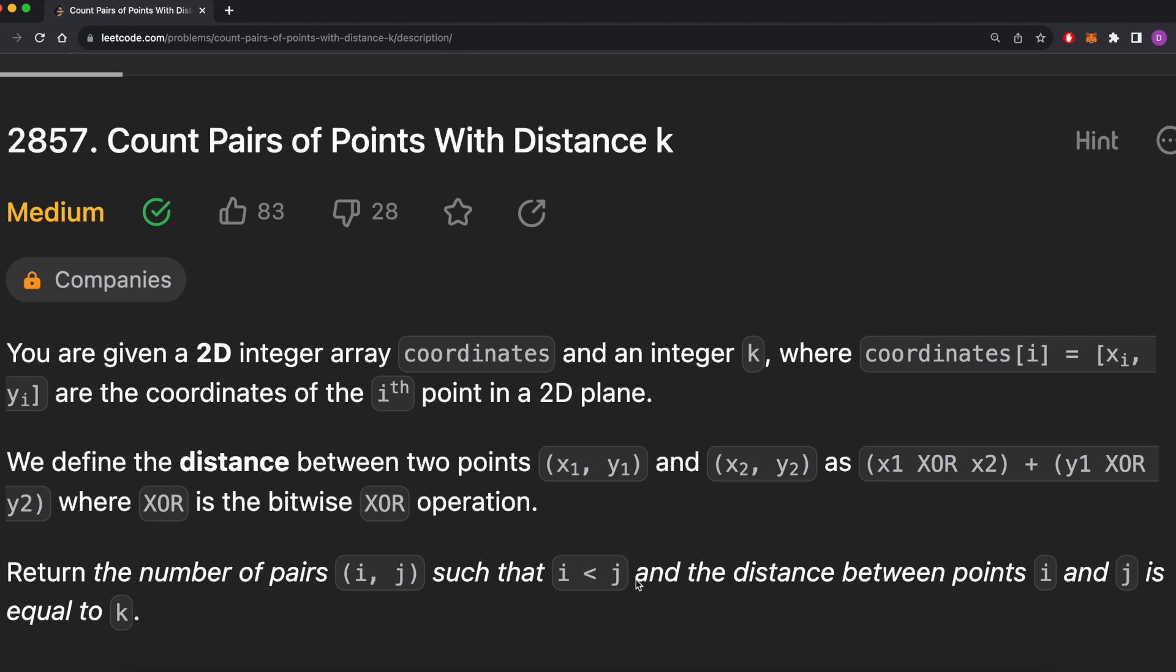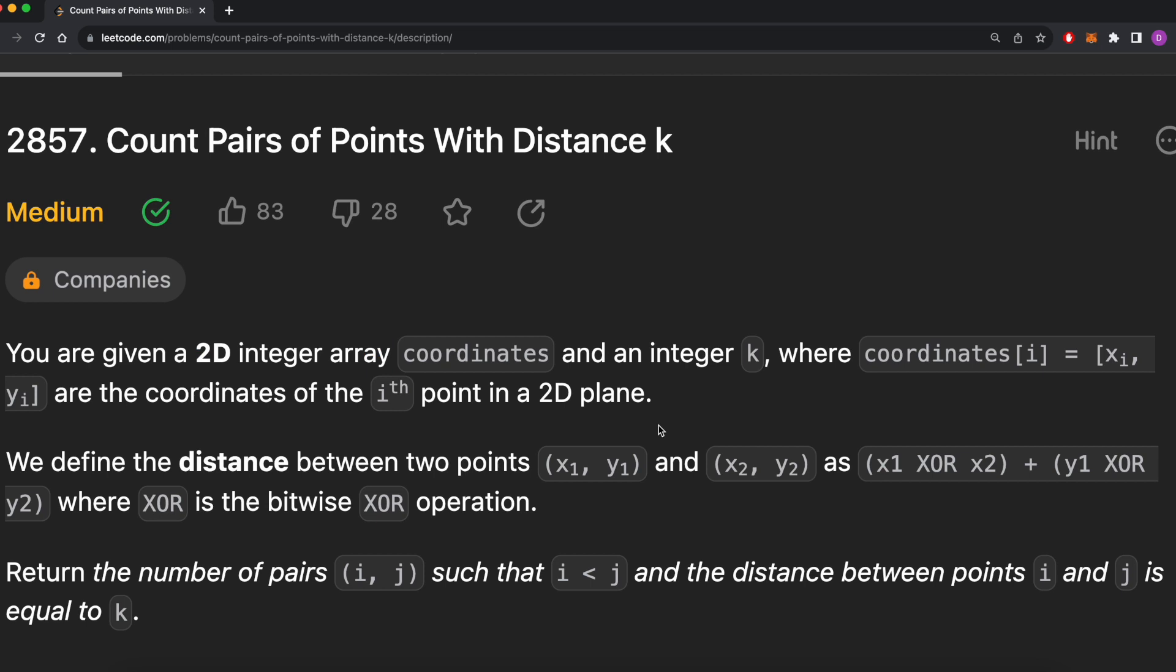In this problem, we're given a list of 2D coordinates, and we have a twist in that we define the distance between points as x1 xor x2 plus y1 xor y2. And given this definition of distance, we want to see how many unique pairs of points in our array have distance equal to k.